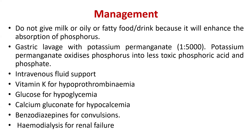In management, all symptomatic treatment is given. Do not give milk or oily or fatty food or drink because it will enhance the absorption of phosphorus. Gastric lavage should be done with potassium permanganate, which oxidizes phosphorus into the less toxic phosphoric acid and phosphates. Intravenous fluid support is given as needed. Vitamin K is given for hypoprothrombinemia to prevent physiological bleeding.